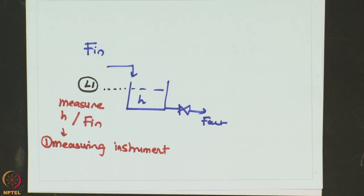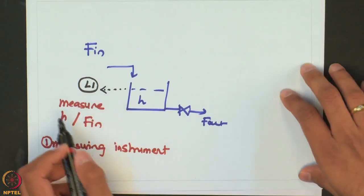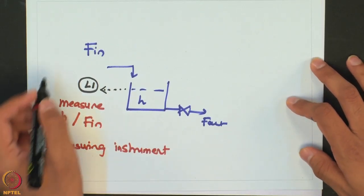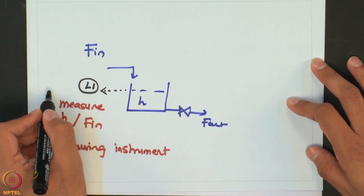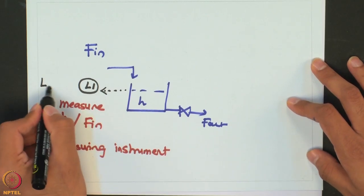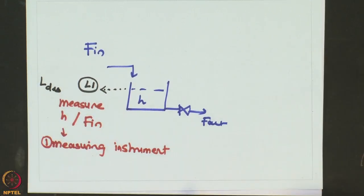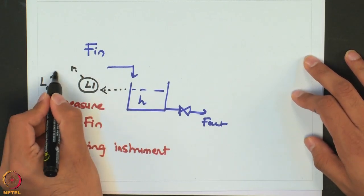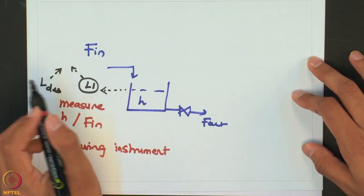Once we measure what is the height inside this tank, in order to take the control action what we need to know is what is the desired value of the height and you would compare whether my current value is higher or lower than the desired value.